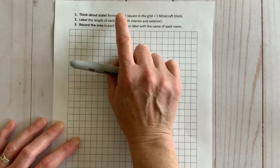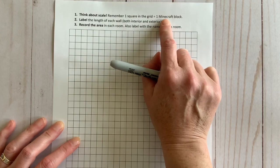Now this is where we need to think about measurements and scale. Each square of the grid is equal to one Minecraft block.